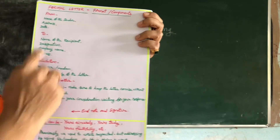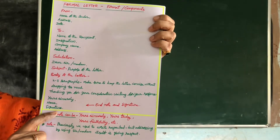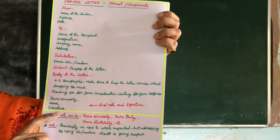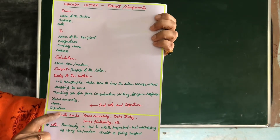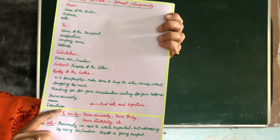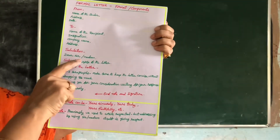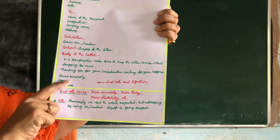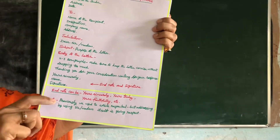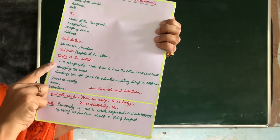After the 'to address,' leave a line and write the salutation — addressing the person, like 'Dear Sir' or 'Madam.' Next comes the subject, which should be written after the salutation — always remember this. The subject is the reason for writing the letter, stating the purpose of this official letter. Then comes the body of the letter, which is generally divided into two to three parts: introduction in one or two sentences, then the details of what you want to convey, and finally a conclusion.